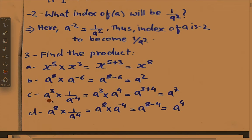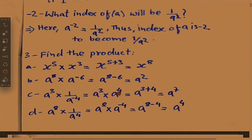C number: a cube into 1 upon a to the power minus 4. Since minus is in the denominator, it should be inverted, so 1 upon a power minus 4 equals a power 4. Now a power 3 into a power 4, both in multiplication form, so base is kept and powers are added: a power 3 plus 4 equals a power 7. For D: a power 8 into 1 upon a power 4. Inverting gives a power minus 4, so a power 8 into a power minus 4 equals a power 8 minus 4 equals a power 4.